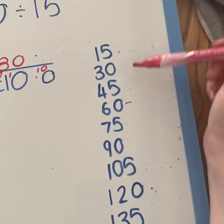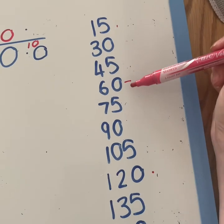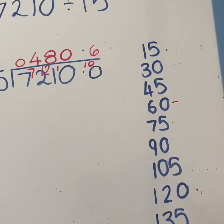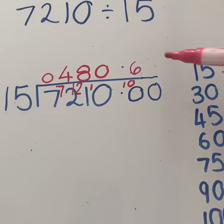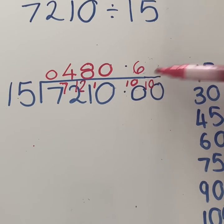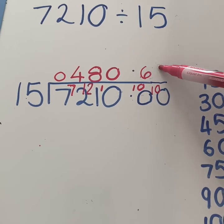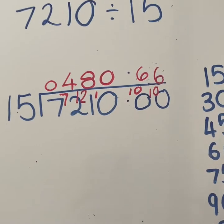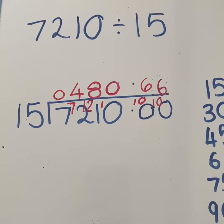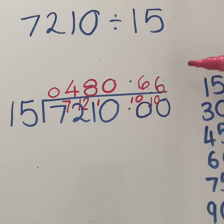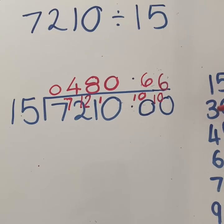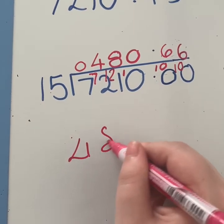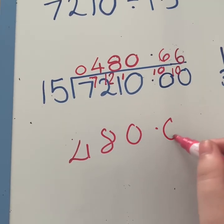So how many 15s go into 100? And 105 is too large. We've got 1, 2, 3, 4, 5, 6. Remainder 10 again. So I'm going to just carry that over. We've already done this. We've got another 6. And I'm always going to stop at two decimal places. You could keep going to get a more accurate answer. But most exam boards and SATs boards wouldn't ask for anything more than this. So our answer is 480.66.